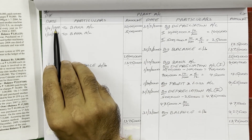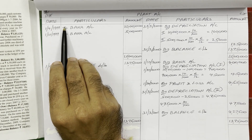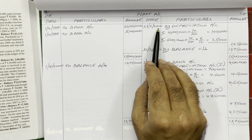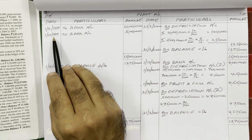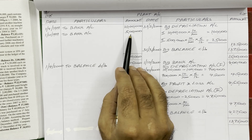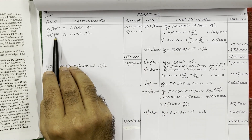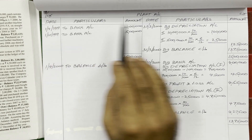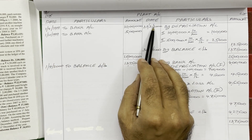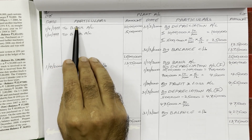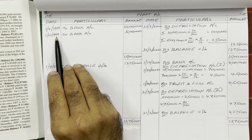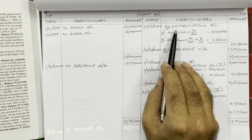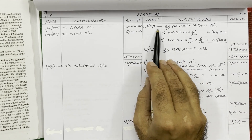Counting 12 months from April 1999, the year ends on 31st March 2000. In this first year, they also purchased another asset for 5 lakh rupees on 1st October 1999. This date falls between 1st April 1999 and 31st March 2000, so it is in the first year only. On the debit side, write 1st October 1999, to Bank Account, 5 lakh rupees.